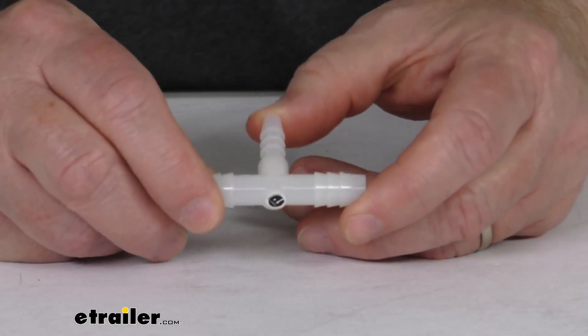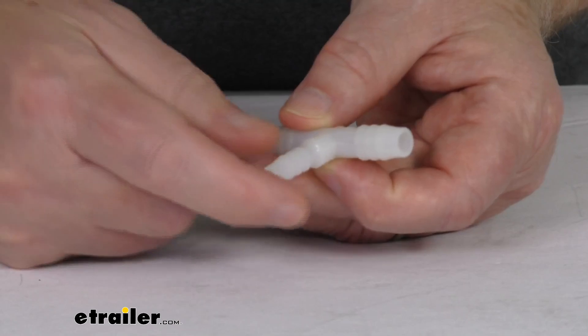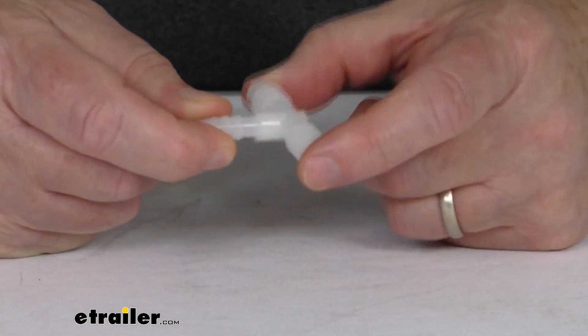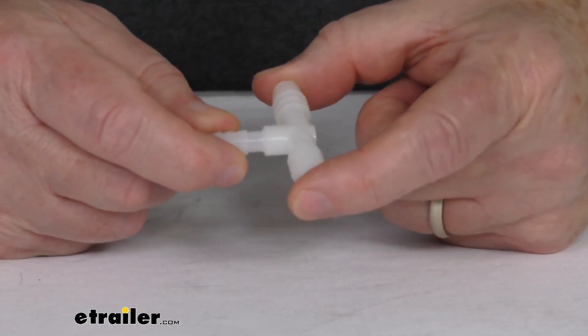This vacuum line T will connect the 1/4 inch vacuum line from the Invisibrake controller to the 3 1/8 inch vacuum line from the towed vehicle engine to the power brake booster.